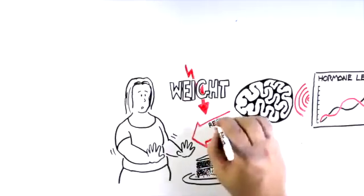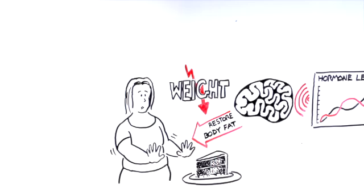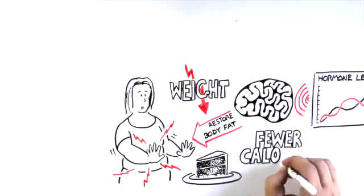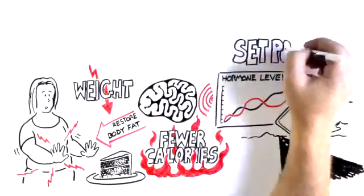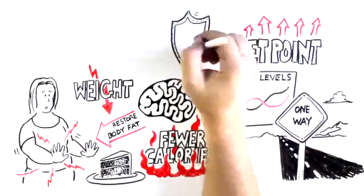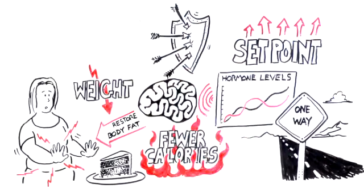Her brain hears this, and it starts acting to restore whatever body fat she's lost. She feels hungrier, and although she doesn't know it, she's also burning fewer calories than before. You see, set point is usually a one-way street. Once it's been elevated, the brain works to defend it, just as vigorously as it would a lower set point.